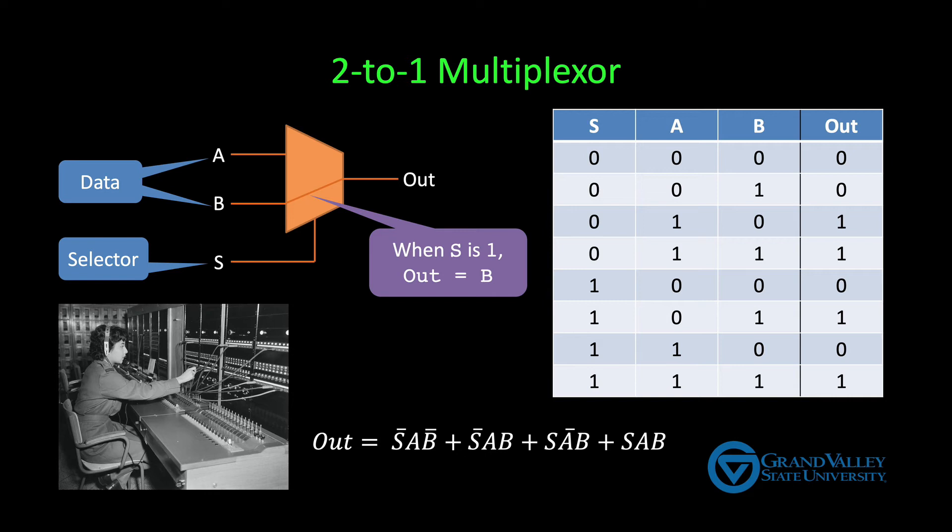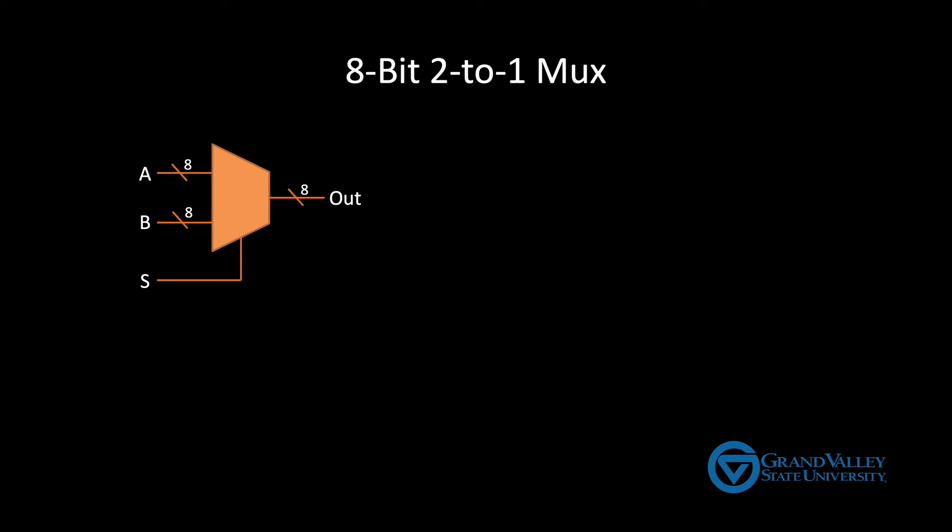This particular MUX shown here selects between two one-bit inputs. However we need a MUX that selects between two eight-bit inputs. Notice that inputs A and B as well as the output are eight bits but the selector is still just one bit. We're selecting either all of A or all of B. We're never taking a few bits from each. Therefore one selector bit is enough to specify what we want to do. Pause the video and see if you can figure out how to implement this eight-bit MUX.